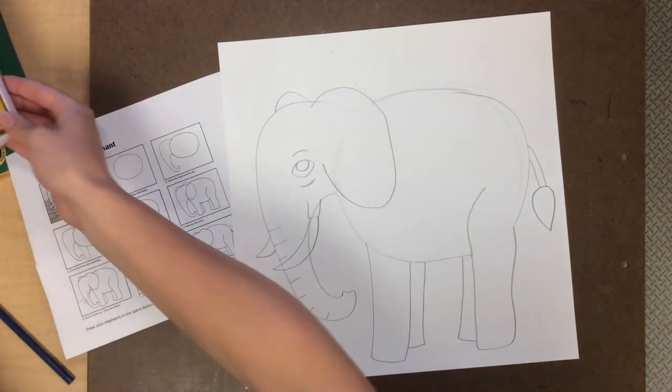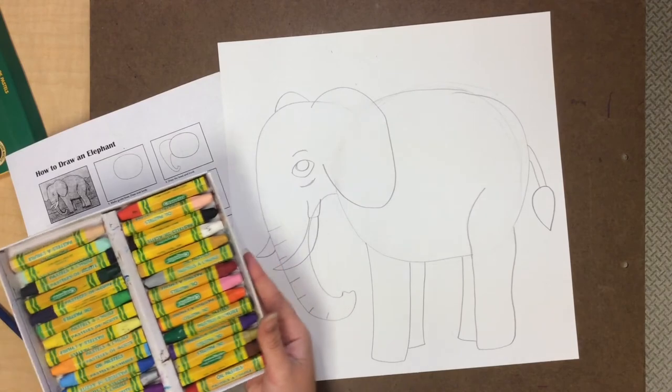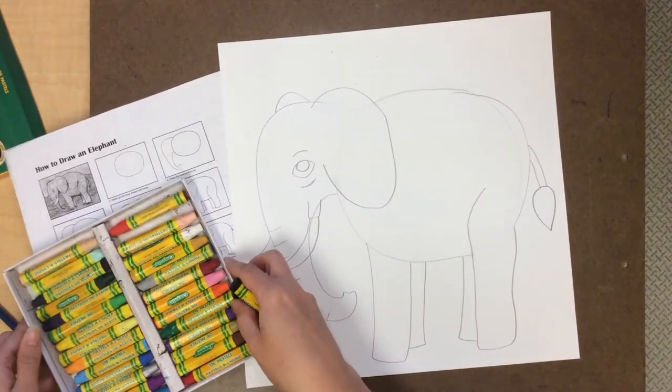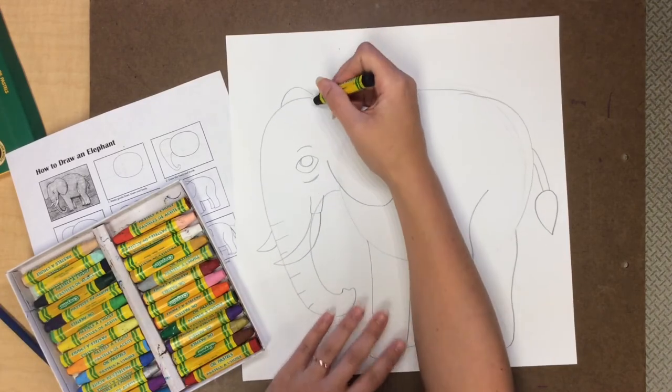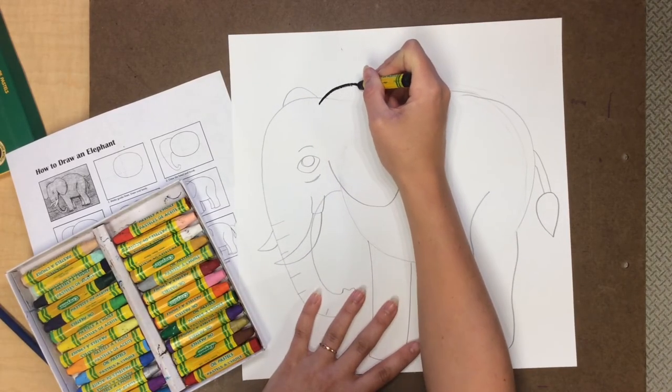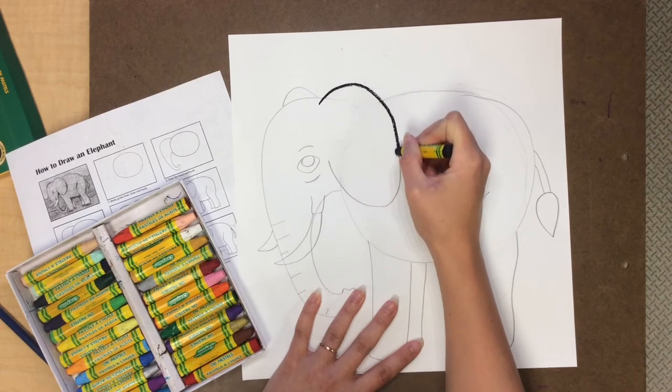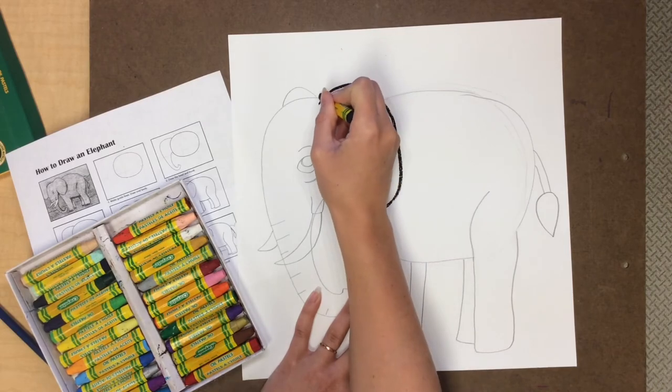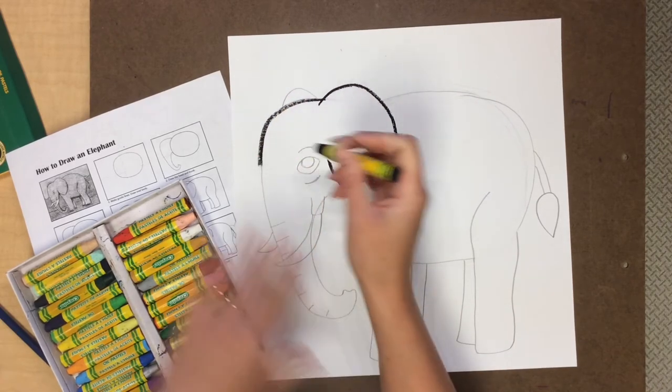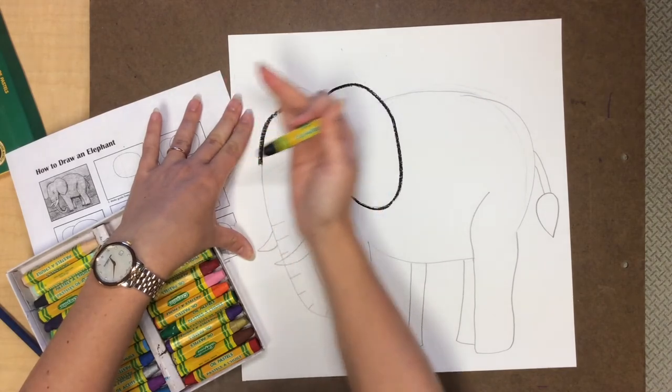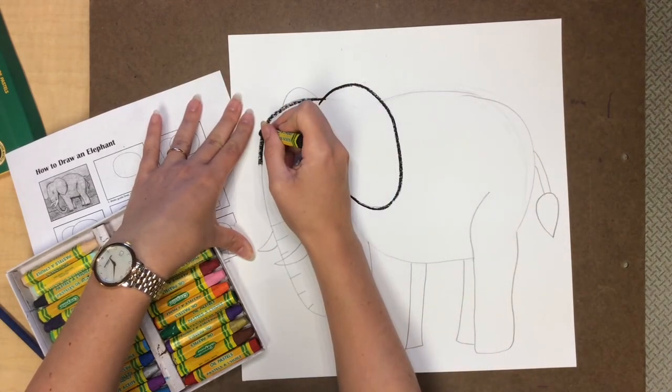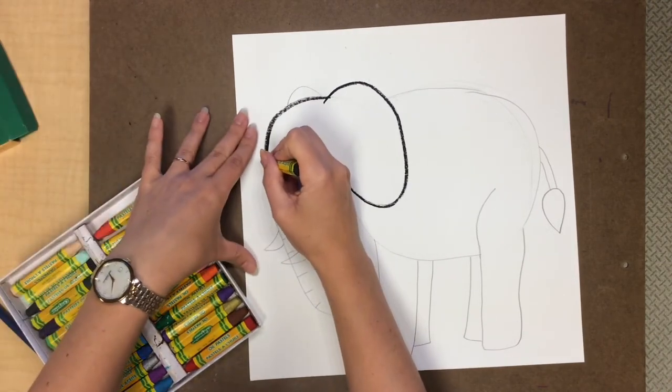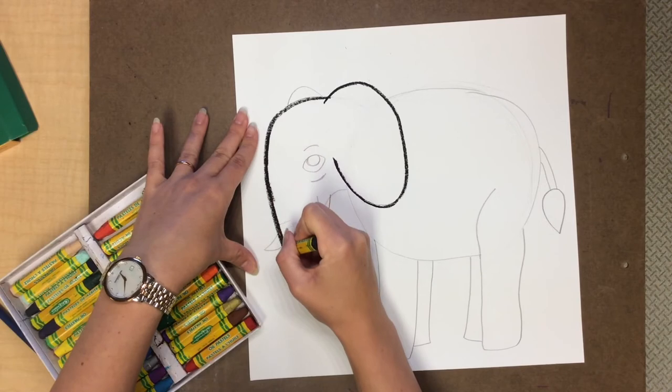Now for the fun part. We are going to decorate our elephant with oil pastels. I can use oil pastels to outline my elephant and to add decorated lines on the inside of the body. So I'm just going to very carefully trace over the outline. And as I trace I'm being very careful because I know if I rub my hand over the pastel it will really smear. And I don't want any of my lines to get smudged.